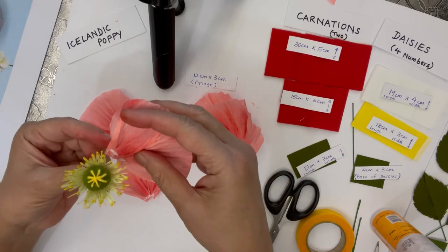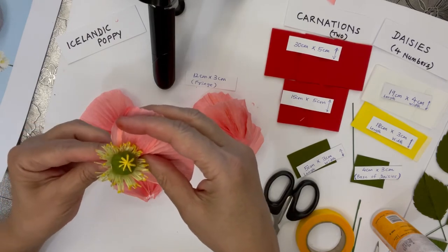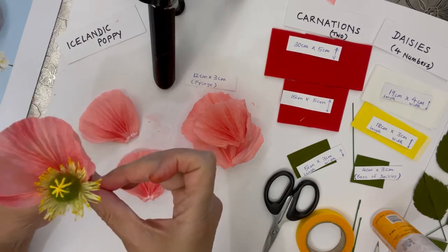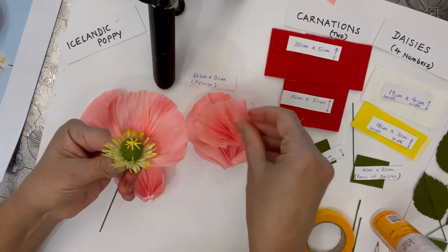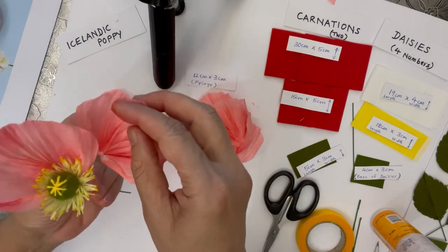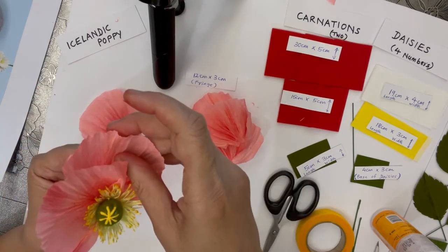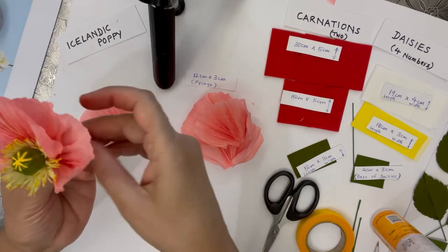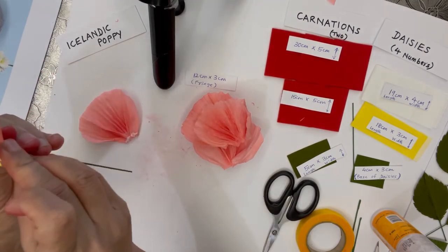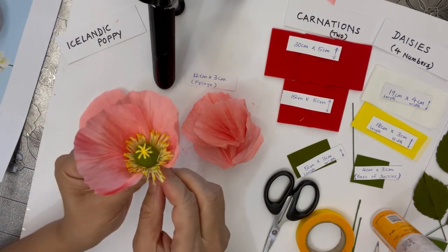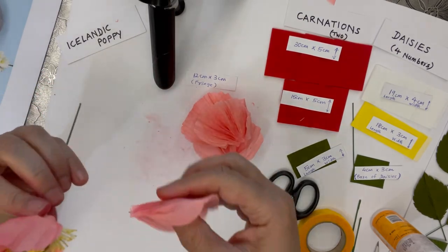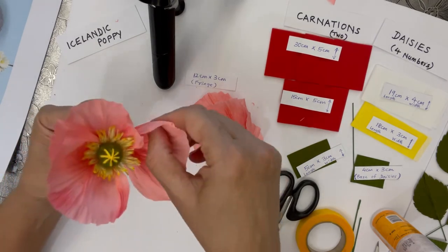Hold the petal from the top, stick it right at the bottom, hold it tightly. The second petal should overlap the first one a little bit. Similarly, hold it from the bottom and press it. Continue with the third petal.